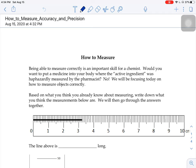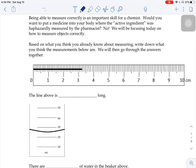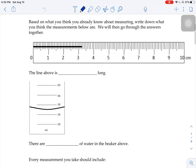Based on what you think you already know about measuring, write down what you think the measurements below are, and then we're going to go through the answers together. So look at that first line and see how long you think that line is, and then there's a picture that looks like a beaker with some water in it. I'd like you to take a second, hit the pause button, and fill in what you think the answer should be, because I want to see where your mistakes are. Hit the pause button, write down your two answers, and then come back, and we'll go over the right answers.